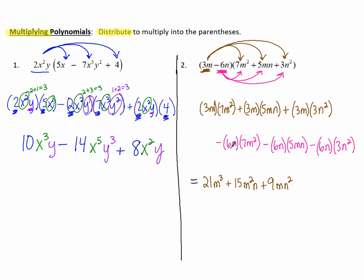Now let's multiply the others. -6 times 7. -42. nm². Usually when we have more than one variable, we'll write them in alphabetical order. So the m will come before the n. So m², n.